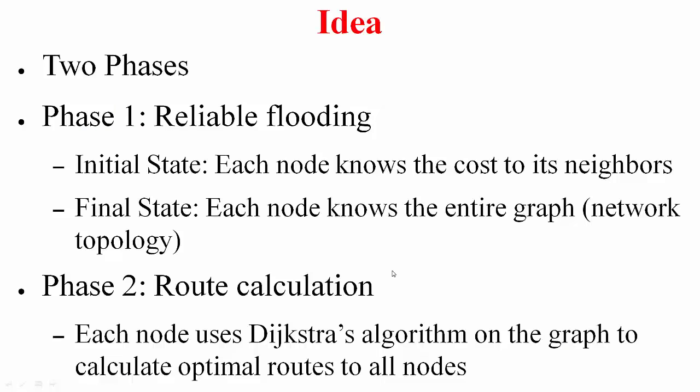The basic idea behind link state is rather simple. There are two phases involved. Phase 1 is called reliable flooding, where to begin with each node knows the cost only to its immediate neighbors, but finally each node knows the entire graph or the network topology.